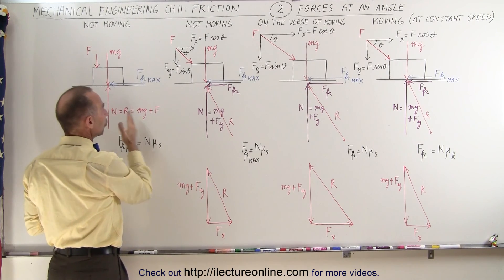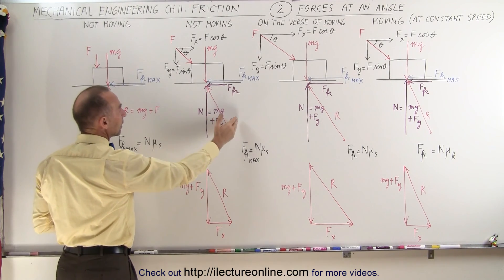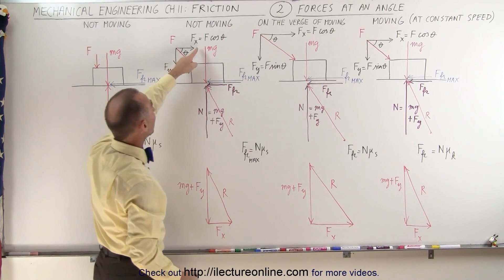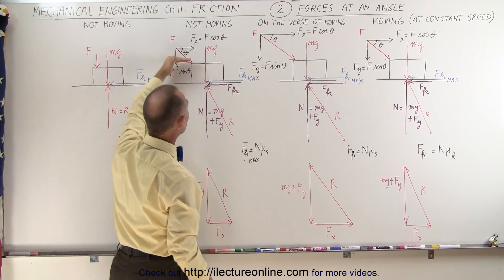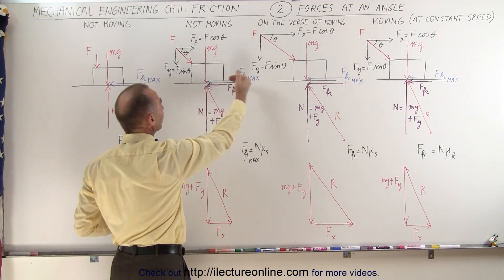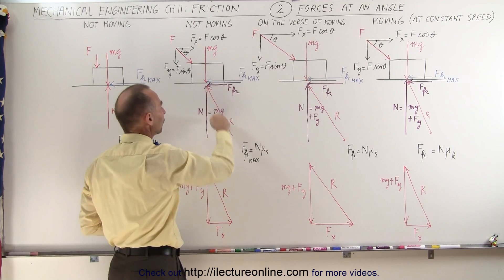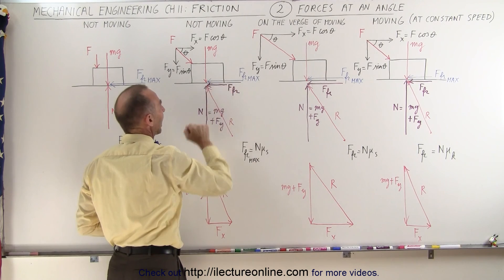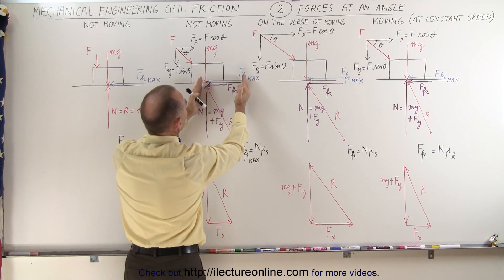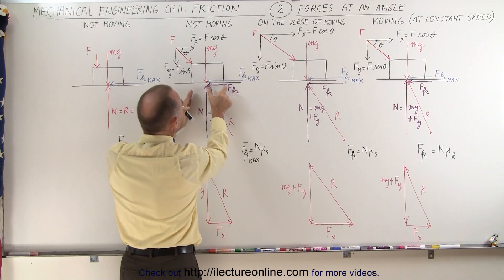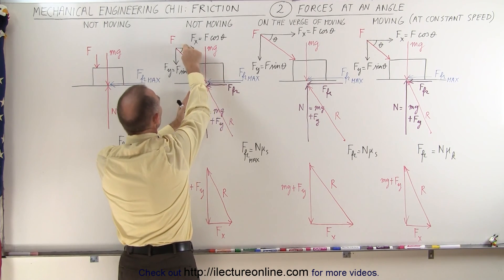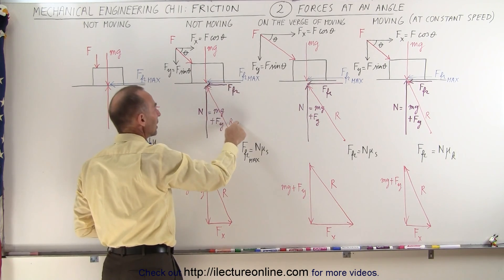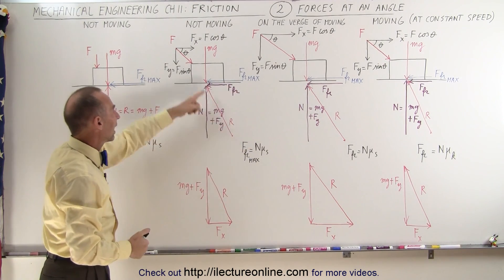Now you can see that the normal force is no longer equal to the reaction force as it is in the first example. That is because there is also a horizontal component, which will be counteracted by the friction force pushing in the opposite direction. The reaction force will be the vector sum of the normal force plus the friction force pushing back. Notice that even though the maximum friction force can be quite large, the actual friction force is only equal to the x-component of the force applied on the block, and that gives us the vector sum equal to the reaction force.